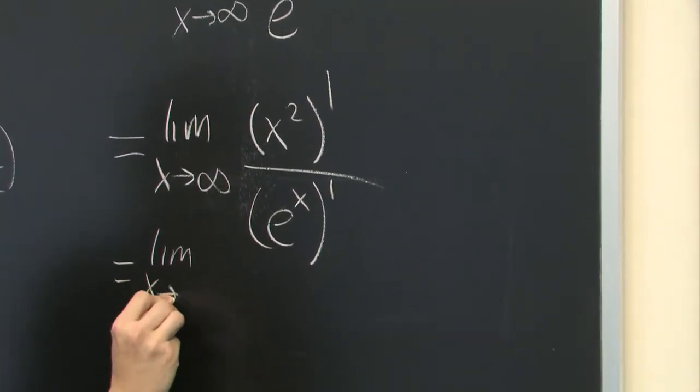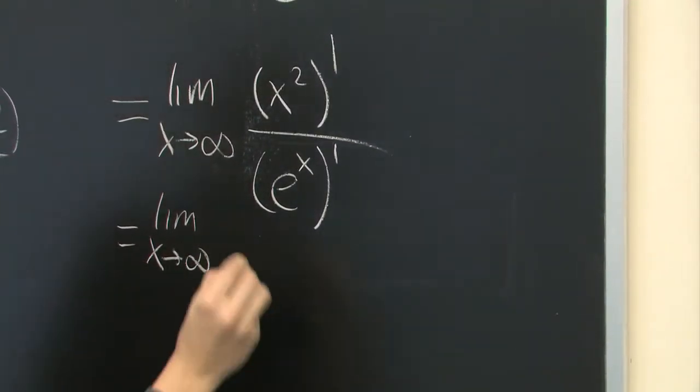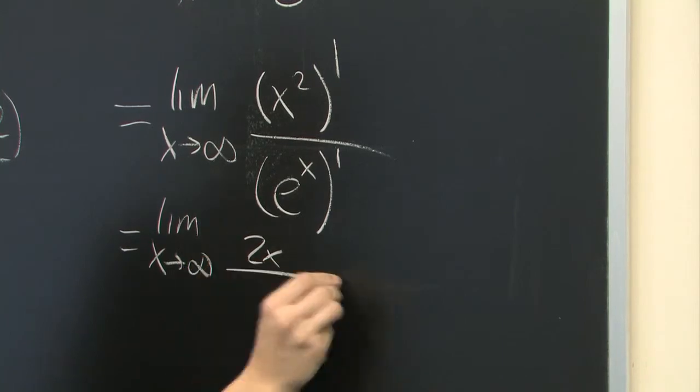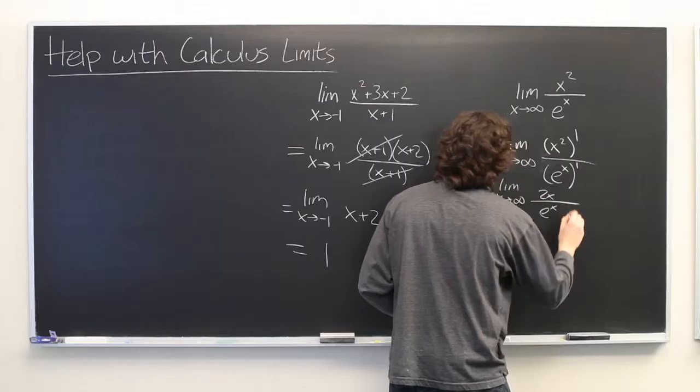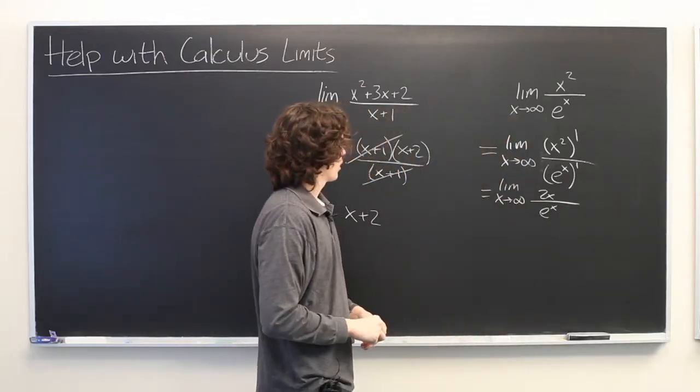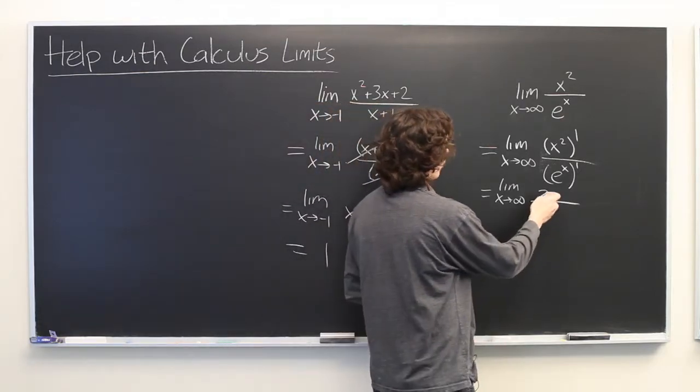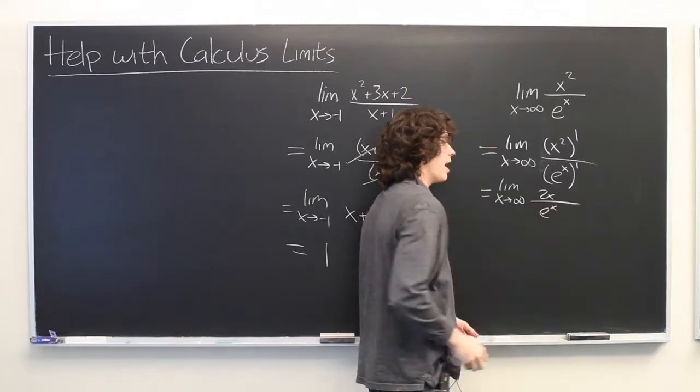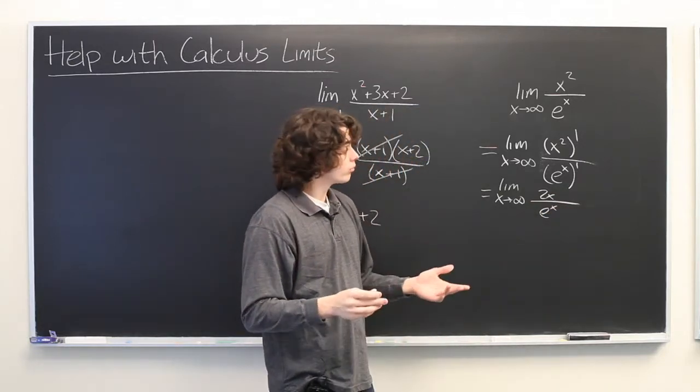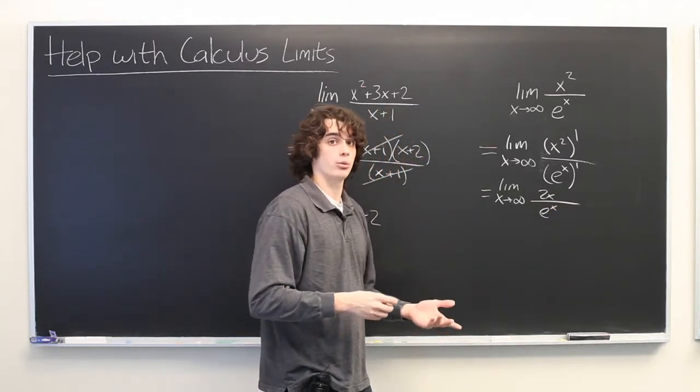So, this is the limit as x goes towards positive infinity of 2x over e to the x. Well, here we try to plug in infinity again and we get the same problem as we had before, infinity in the numerator and infinity in the denominator. So, we'll just apply L'Hopital's rule again.